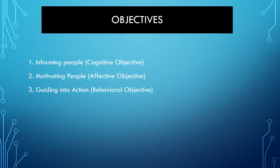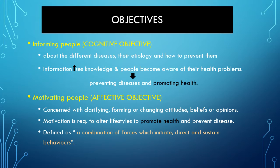There are three objectives. First, informing people; second, motivating people; and third, guiding them into action. Informing people falls under the cognitive objective. Motivating people falls under the affective objective, and guiding into action is the behavioral objective. Informing people means informing them about different diseases, the etiology, and how to prevent them. Information increases knowledge and people become aware of their health problems, and therefore can prevent diseases and promote health — both individually and at the community level.